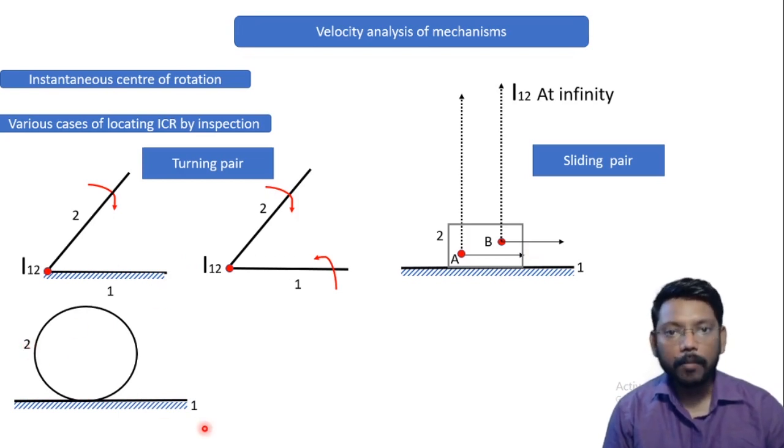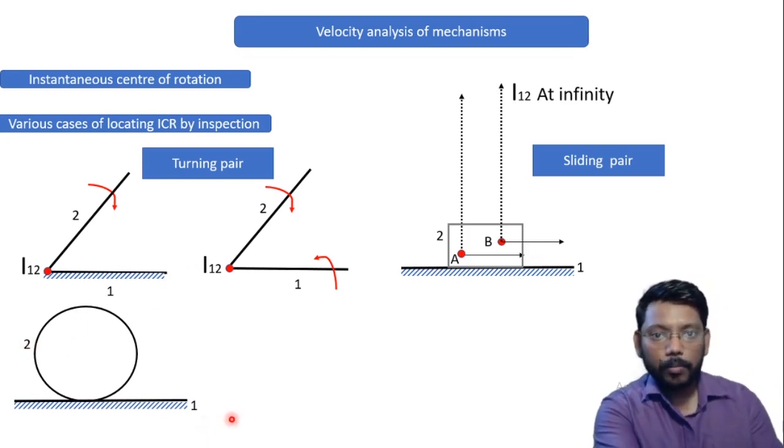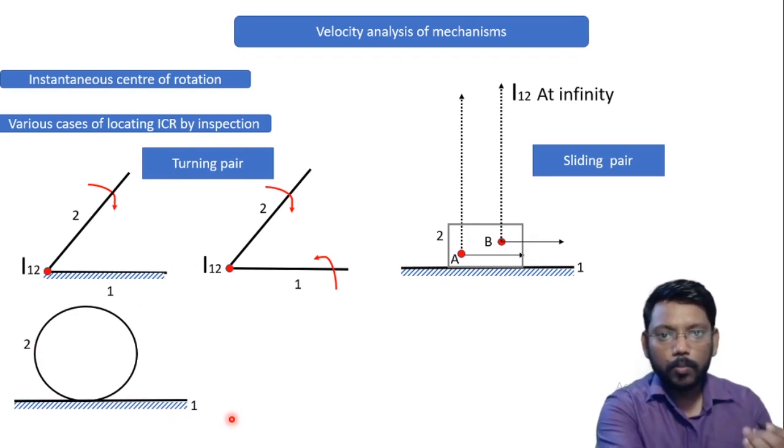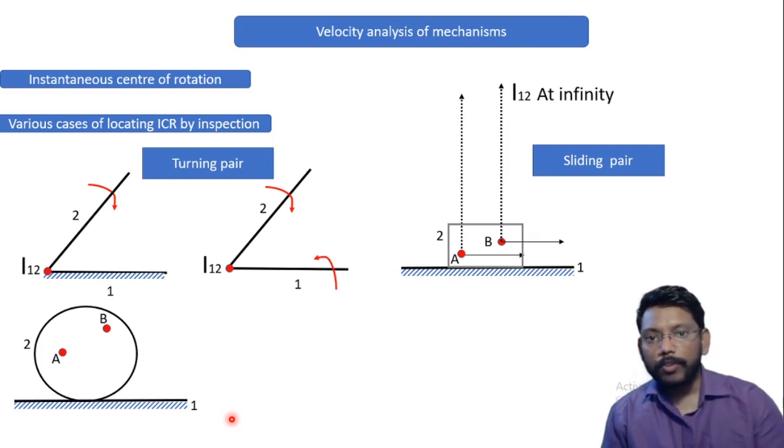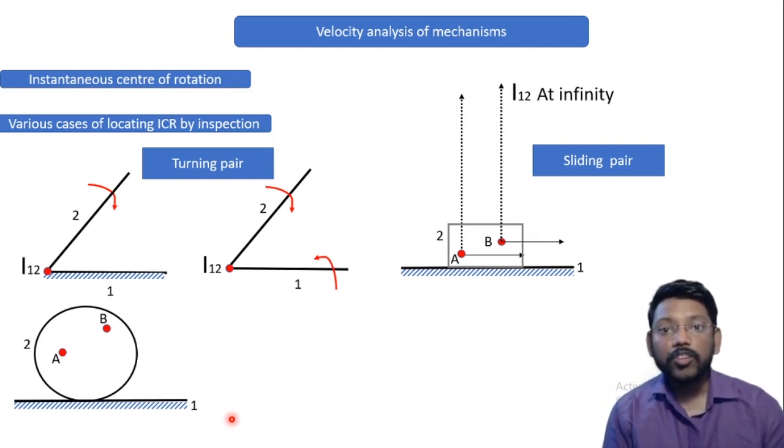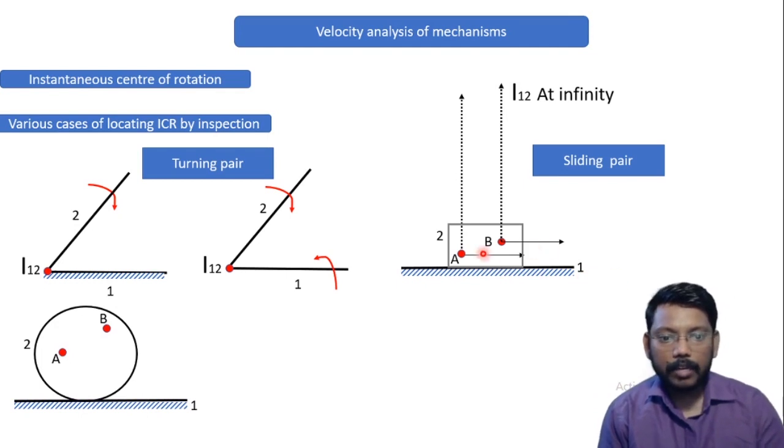Now if I have a circle or a cylinder, it will have two points A, let's suppose point A and B, each point will be having velocity which will be in different direction. Now we have seen here that both directions are in the right direction, but in this case the direction will be different.